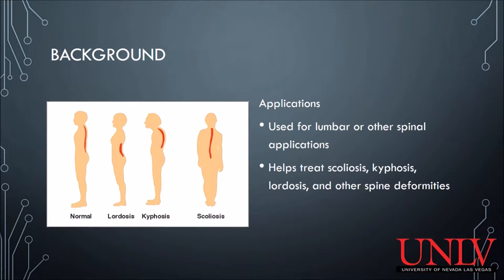Some background about the device. First, we will discuss the applications for the UEC. It provides treatments for patients with spine deformities such as scoliosis, kyphosis, and lordosis. The figure here provides examples of these deformities. The cage can also be used to treat other spine issues based around the entire spine.